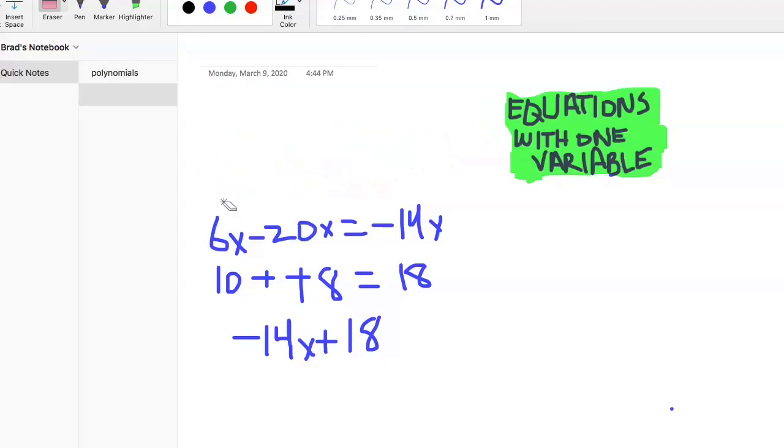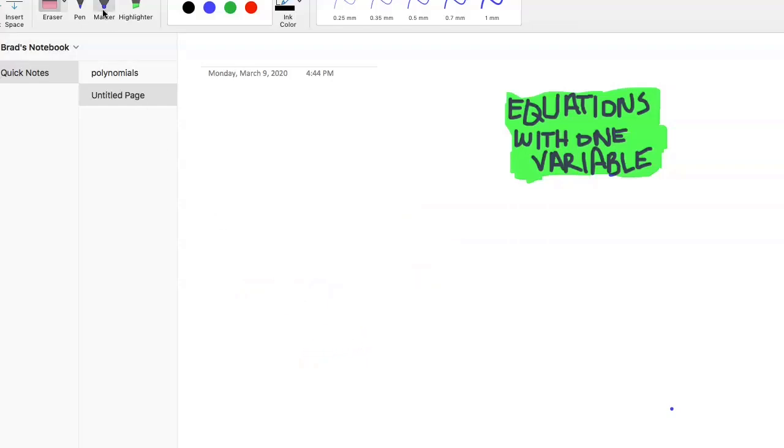That's the first one. All we really did was distribute, make sure to remember two negatives equals a positive and just some straightforward calculations. Second one: one-third plus three-fifths equals 10 minus X.